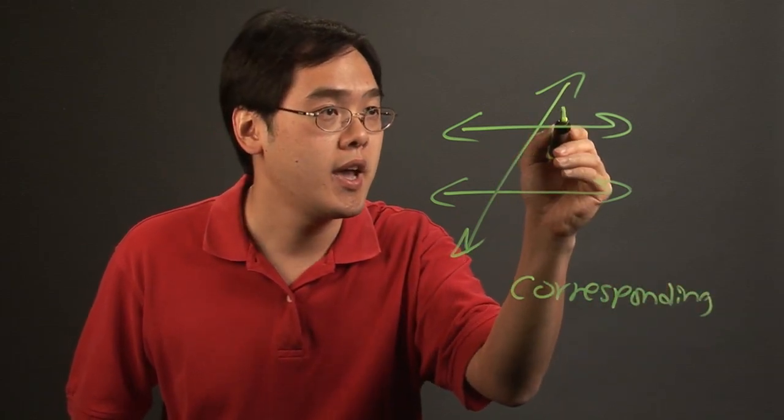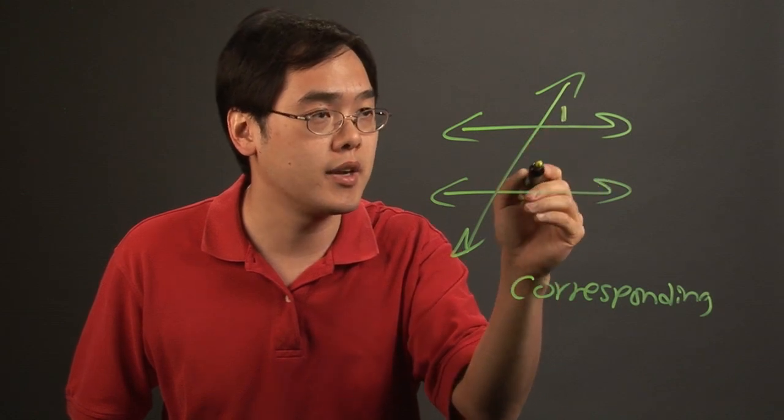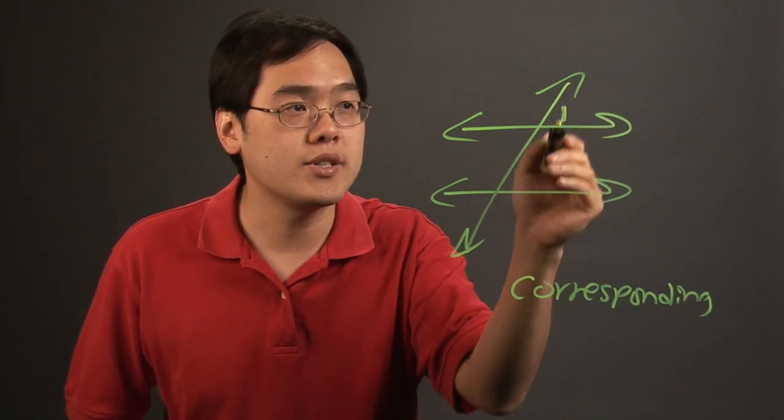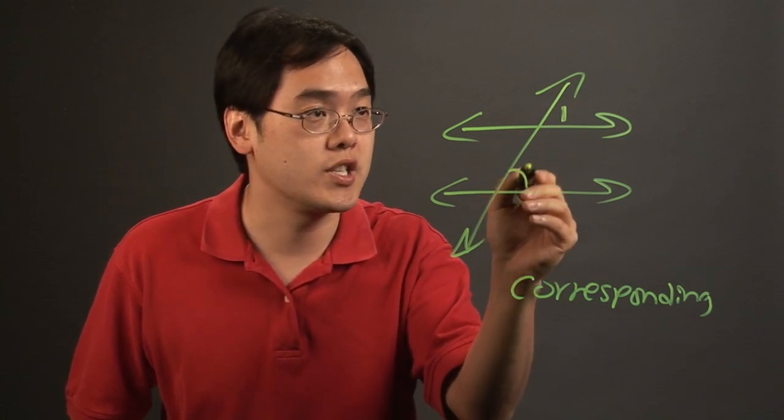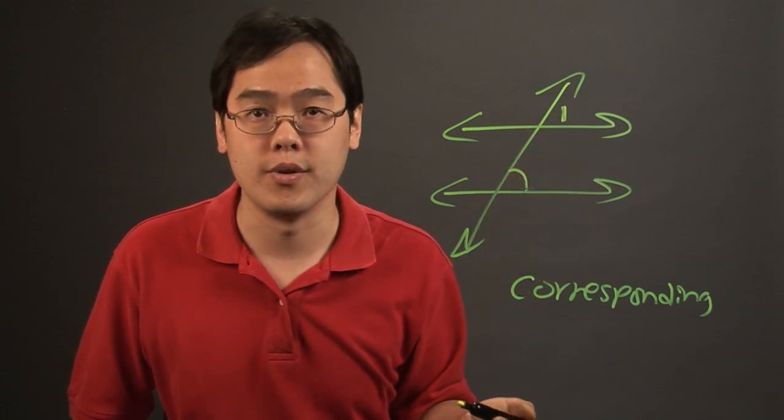So in this particular case, because angle one is over here hypothetically, other angles that have this kind of pattern will also be congruent to it. So in this case, this angle, which is just like this angle, is going to be congruent to it.